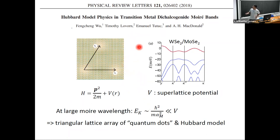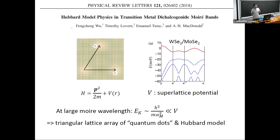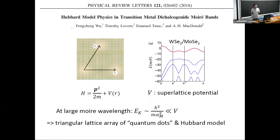The idea is simple. Consider for example the TMD bilayer WSe₂/MoSe₂. Because of the fundamental work function difference between the two layers, low-energy carriers live only on the WSe₂ layer. The role of the MoSe₂ layer is to introduce a periodic modulation of the structure, leading to a periodic modulation of the valence band edge. This can be modeled as a superlattice potential for carriers in the WSe₂ layer.